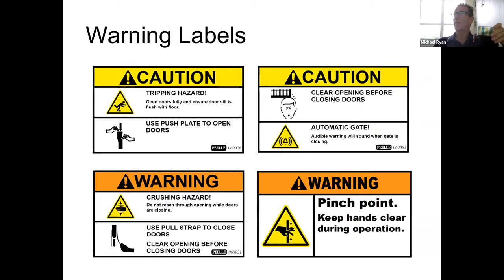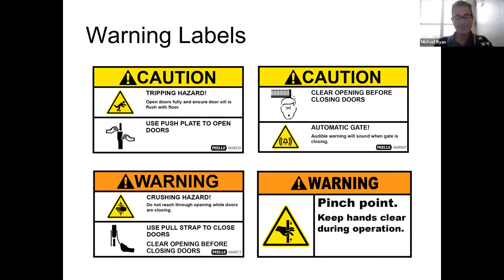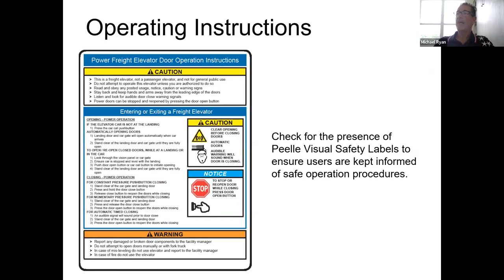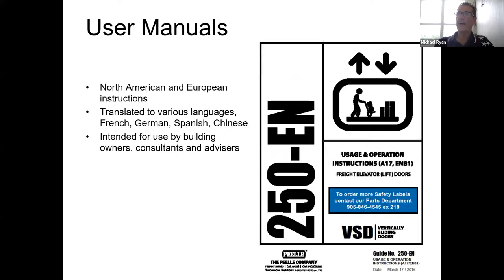Some manufacturers, us included, are providing warning labels. These labels cover anything from watch out for tripping, how to open a manual door, warning people that the gate is closing in automatic operation. These are stickers we provide with our product that we hope people attach to the inside of the car enclosure to keep people safe. In addition, we provide operating instructions supposed to be affixed inside the car enclosure. All of this is about safety.